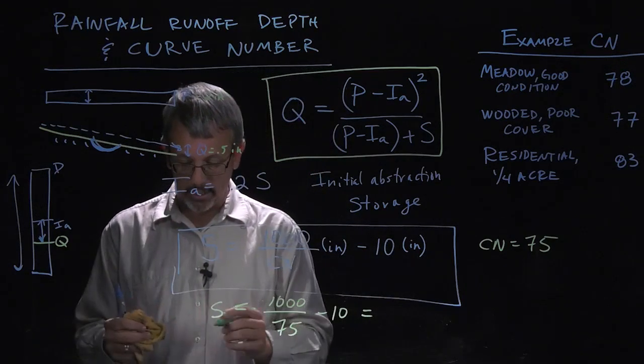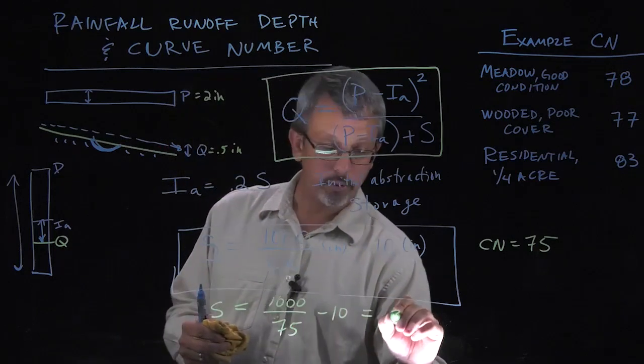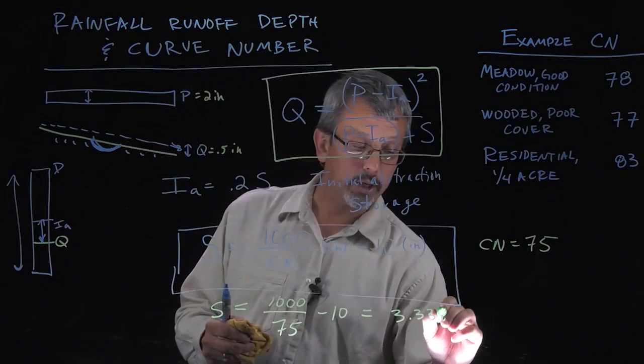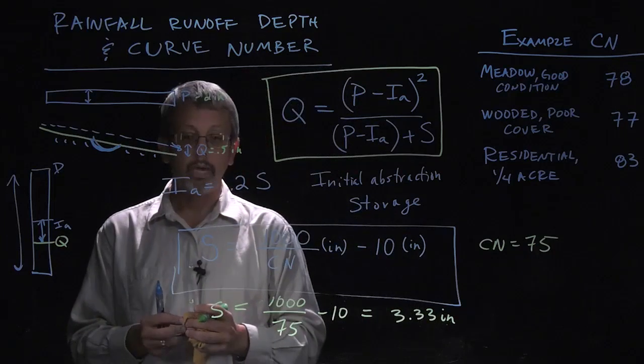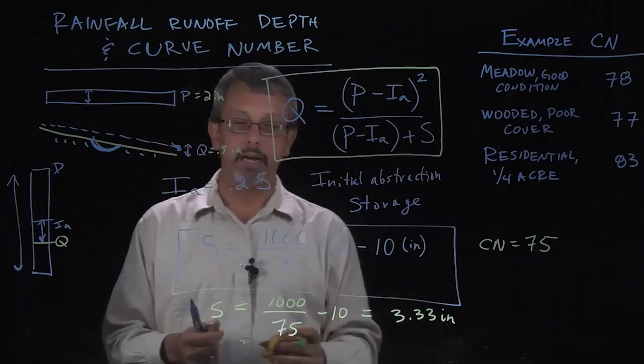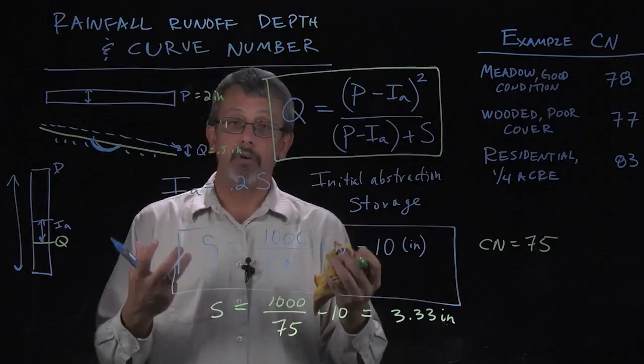If I actually calculate that value, I get 3.33 inches. That would give us our storage value. That's how much rainfall we consider to store.